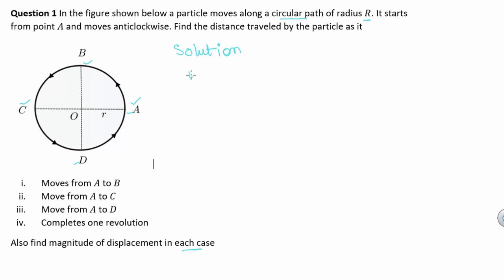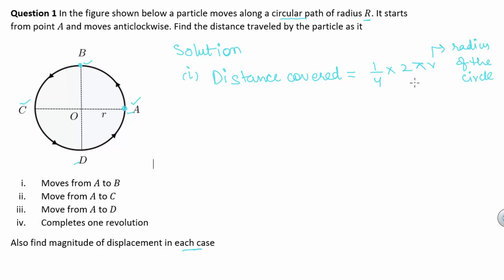In part 1 of the question, we have to find the distance travelled by the particle as it moves from point A to point B. The distance covered in this case would be (1/4) × 2πr, where r is the radius of the circle. We are taking 1/4 of 2πr because the distance travelled from A to B is one-fourth of the circumference of the circle. So distance travelled = (1/2)πr.